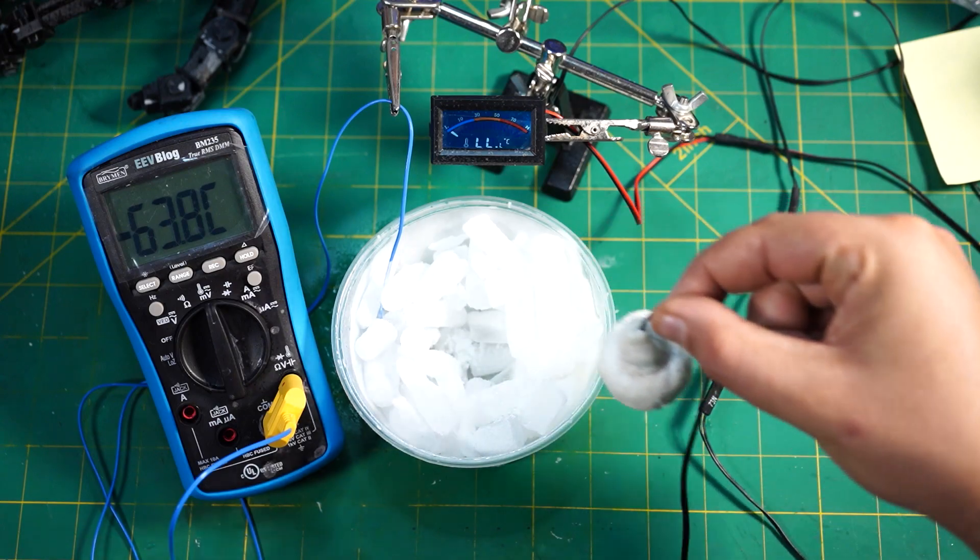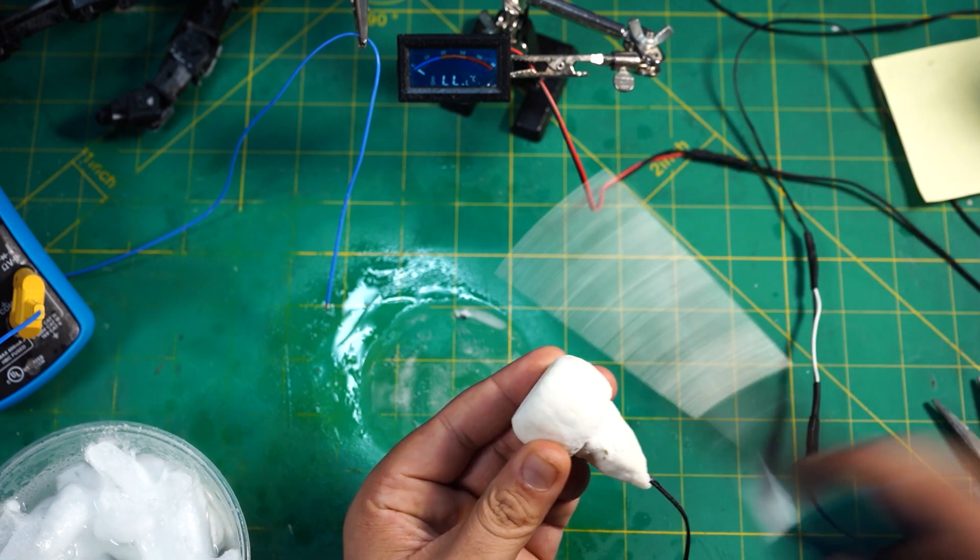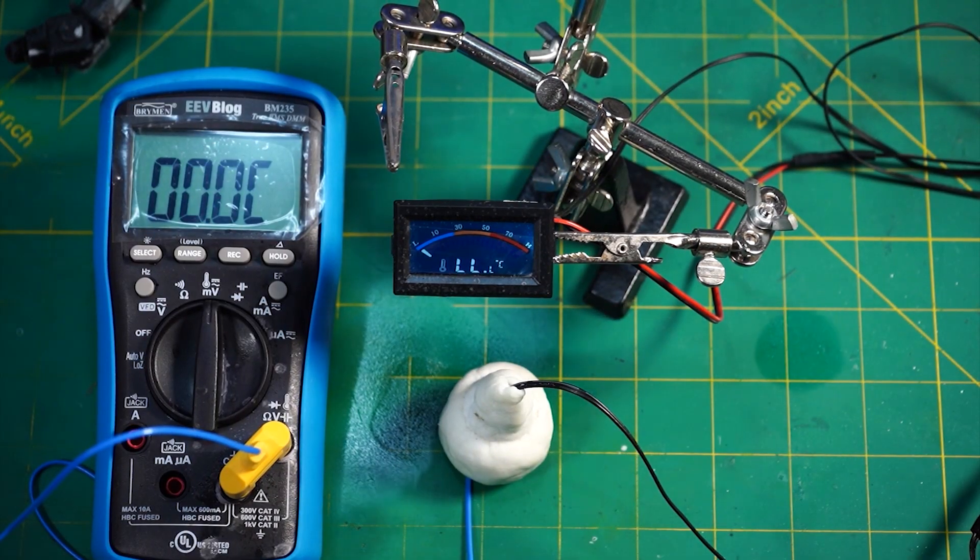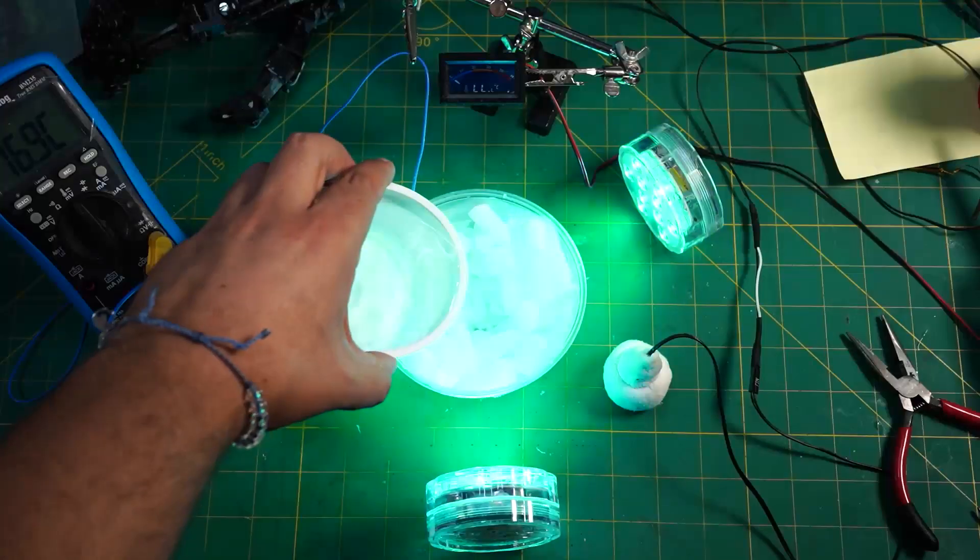However, I achieved to freeze the probe rock solid. And no, I will not smash the sensor with a hammer. Thawing the probe back up to room temperature took 70 minutes, 49 seconds, by the way. And here is some more dry ice fun.